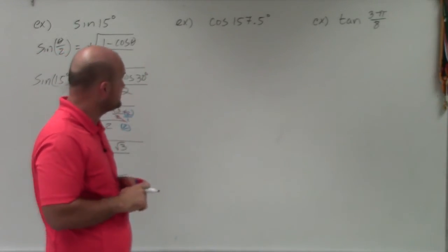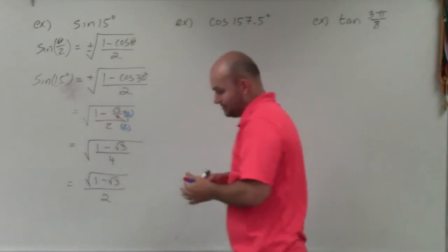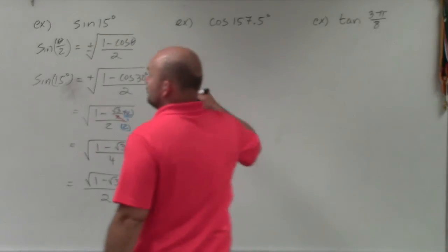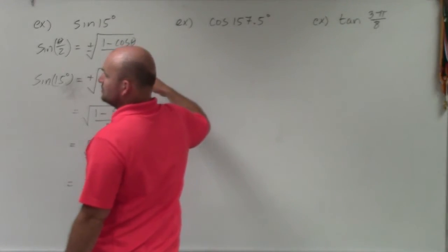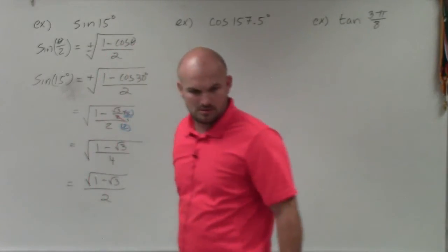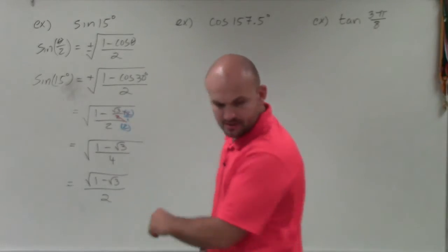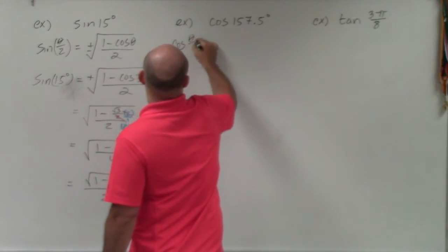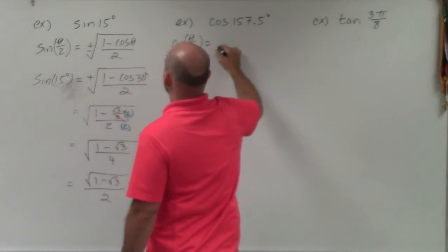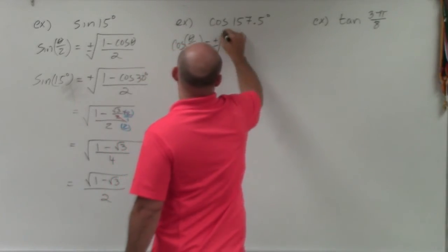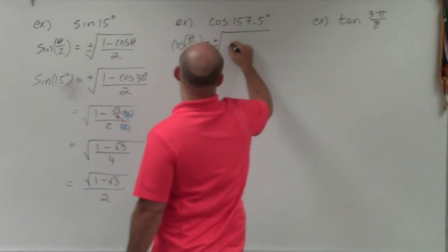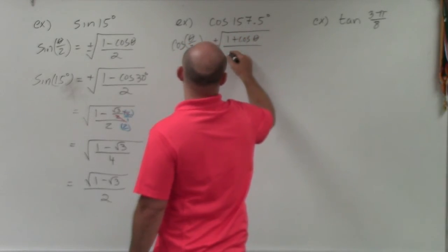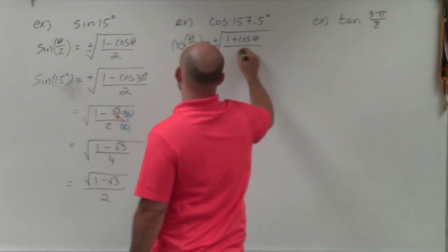Now let's look at the second problem. The half-angle formula for cosine is: cosine of theta divided by 2 equals plus or minus the square root of 1 plus cosine of theta, divided by 2. Note the difference from sine — it uses 1 plus cosine instead of 1 minus cosine.